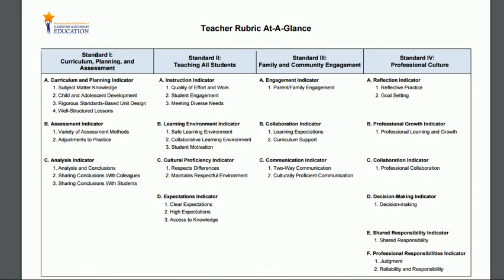These performance descriptors are observable and measurable statements of educator actions and behaviors aligned to each element. They serve as the basis for identifying the level of an educator's performance in one of four categories: exemplary, proficient, needs improvement, and unsatisfactory. The architects of the model rubric distinguished among the four performance levels on the basis of quality, scope of impact, and consistency. Without attention to all three, distinctions between different levels of performance are likely to be superficial.